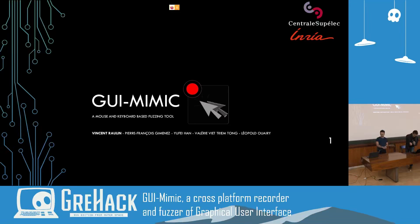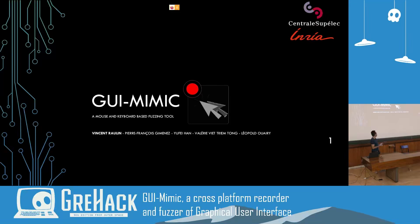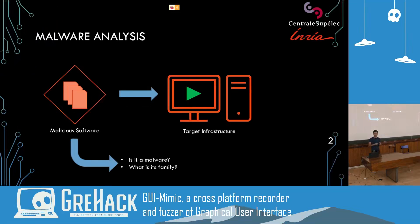Thank you. I work at the CIDRE team. I'm a PhD student at CentraleSupélec and INRIA. I'm presenting a tool that we developed for our own purposes and want to share. GUI Mimic is a fuzzing tool that works by interacting with the mouse and keyboard. First, I need to explain why we needed it.